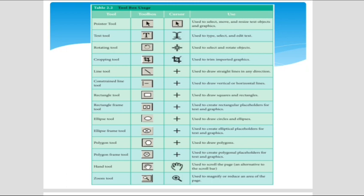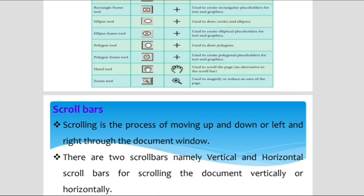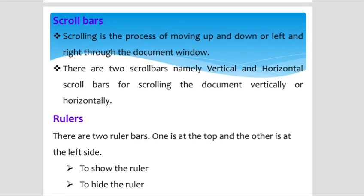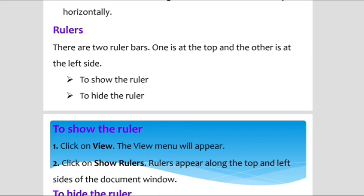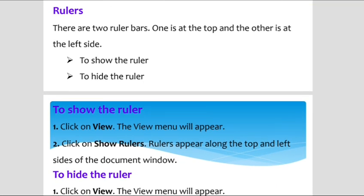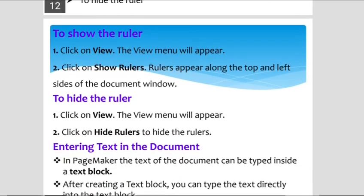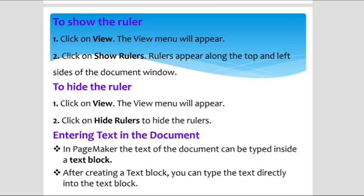Next is the scroll bar. With the help of the scroll bar we can move up and down and navigate vertically and horizontally. Next is the ruler. The ruler appears at the top and left side of the document. To show or hide the ruler, click the View menu. The main purpose of the ruler is to help place pictures or text at scaled positions within the document.